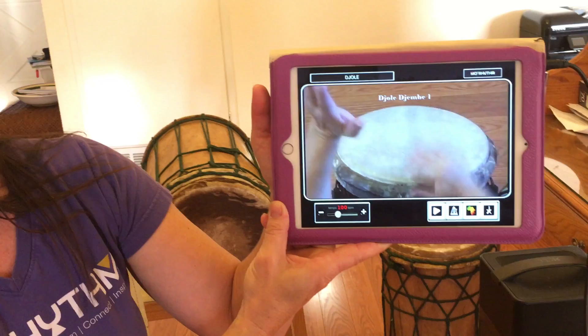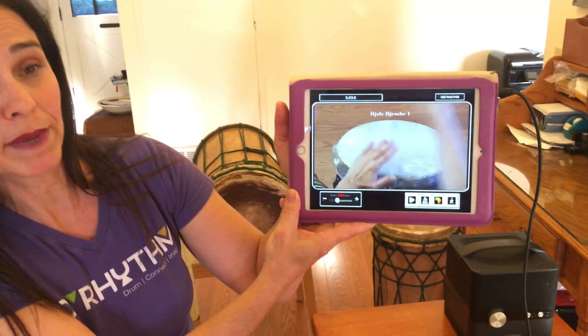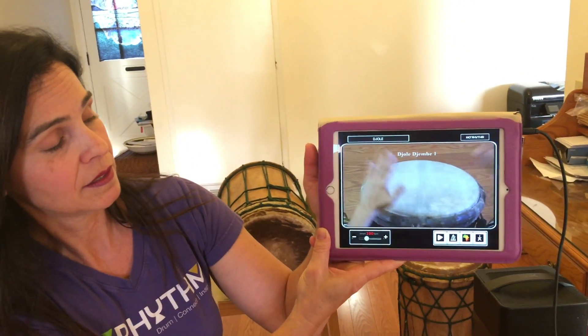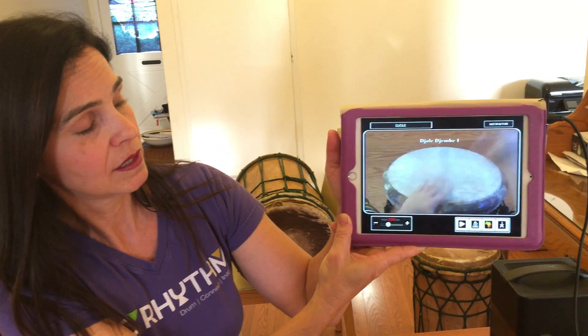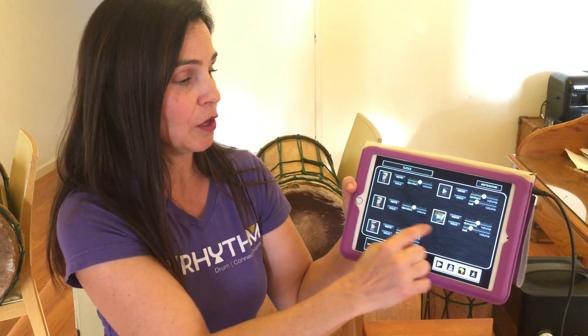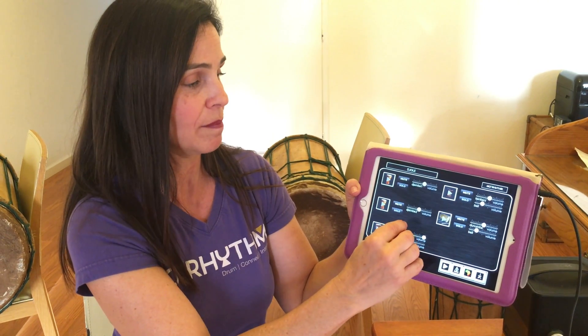They're about 30 seconds long to show you the movement of the hands for each of the drum parts. So if it's a new rhythm that you've never learned before in a class and you want to see how the hands move, then you can download those videos. One rhythm is 99 cents. You'll get all five videos for 99 cents for each rhythm.